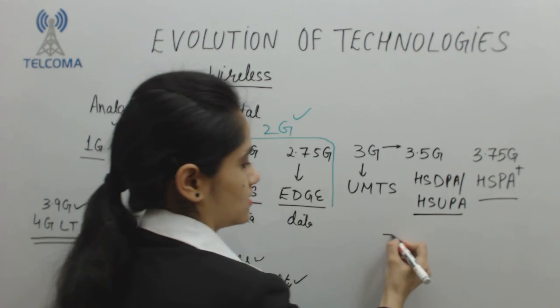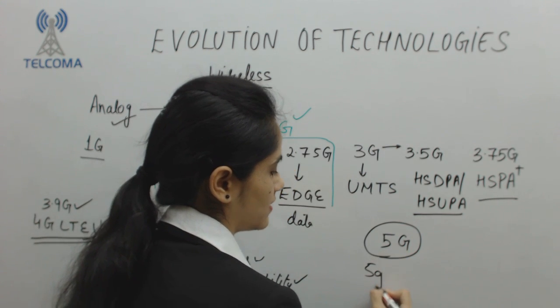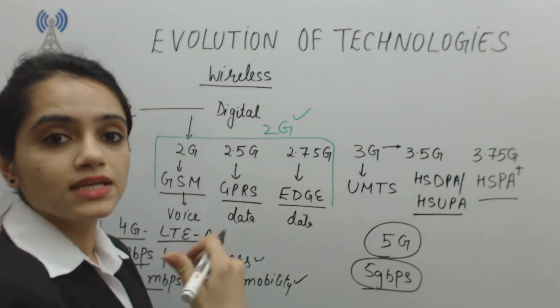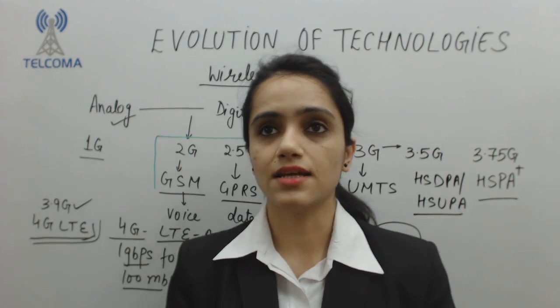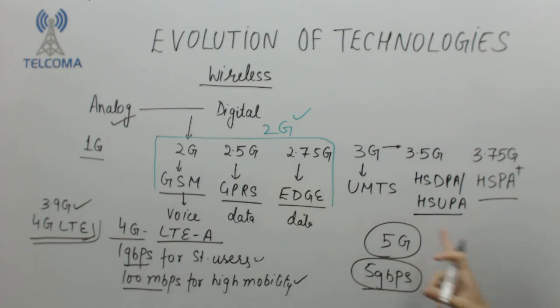Now we have a target of 5th generation. In 5th generation what we require is 5 Gbps and this is our target with increased mobility, increased data rate and latency should be very less. So this is our evolution of the wireless technologies.